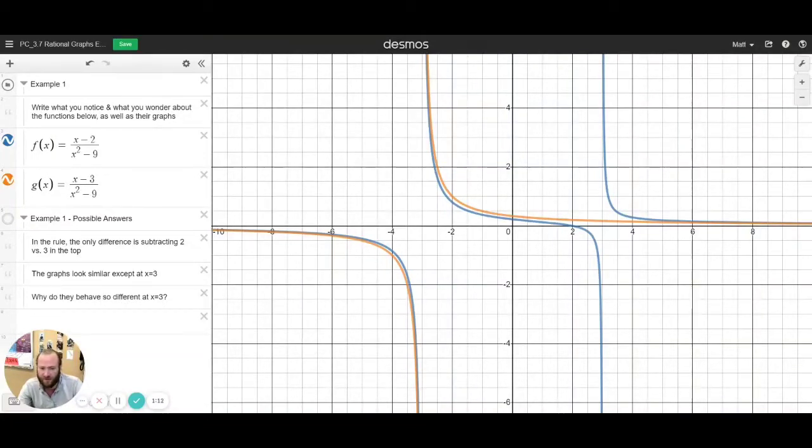And there is a particular x value that seems of importance, like we said, and that's happening here at x equals 3. So really, the big question here is, why are they behaving so similar everywhere else except when x equals 3?